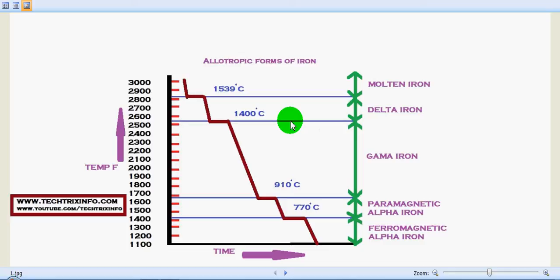From 1400 degrees Celsius to 1536 degrees Celsius, that is in molten state, we have the delta iron. The crystal structure is body centered cubic lattice, and this is in molten state.